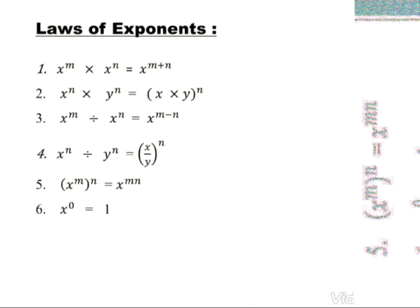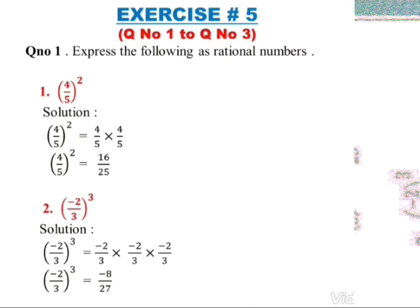Any number raised to the power zero equals one. This is called the zero law. If x is any non-zero rational number and the power is zero, then it equals one. x must be non-zero — other than zero.